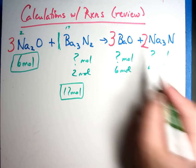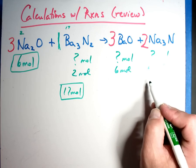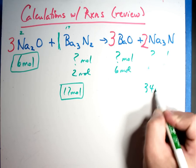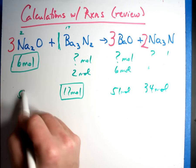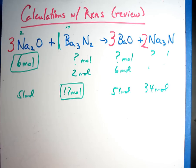So 17 times 2 is 34, 17 times 3 is 51 moles. And we've done this before. As long as everything is in moles, we can work it.